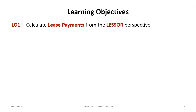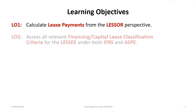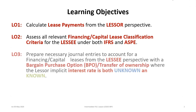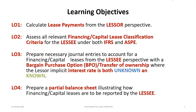There are four learning objectives for this tutorial. First, we will review how to calculate the lease payments from the perspective of the lessor. Second, we will assess all the relevant financing or capital lease classification criteria from the lessee's perspective under both IFRS and ASPE. Third, we will prepare the necessary journal entries to account for financing capital leases from the lessee perspective where there is a bargain purchase option, in situations where the implicit interest rate is both unknown and known by the lessee. Finally, from the lessee perspective, we will prepare a partial balance sheet illustrating how financing capital leases should be reported.